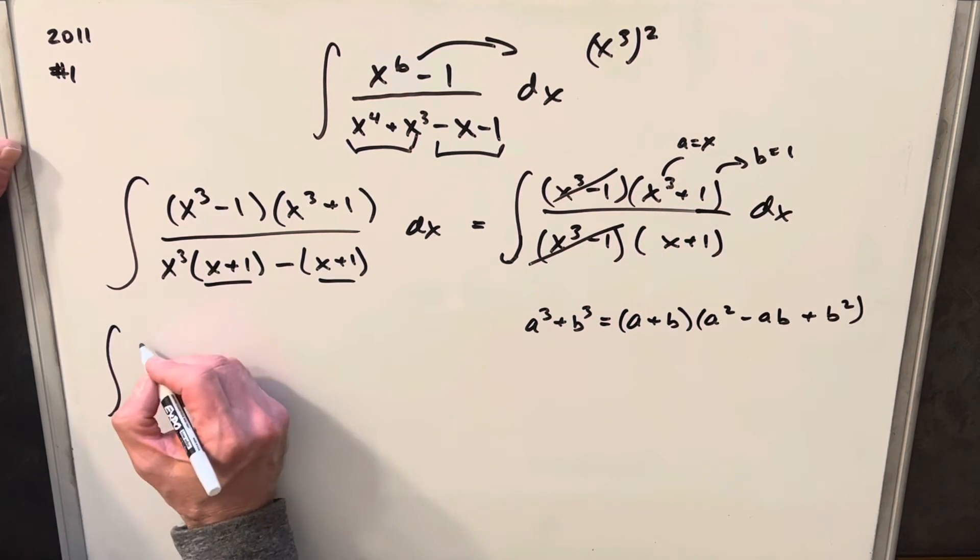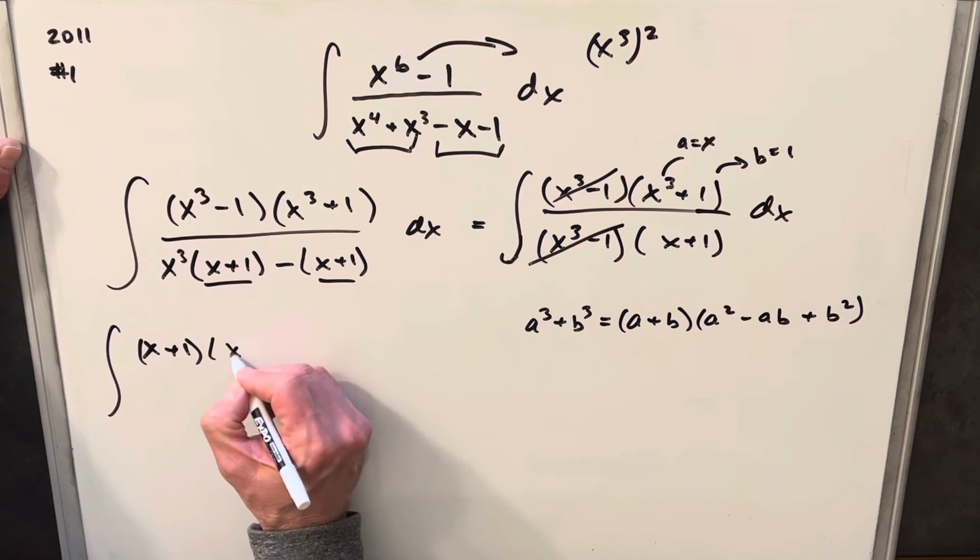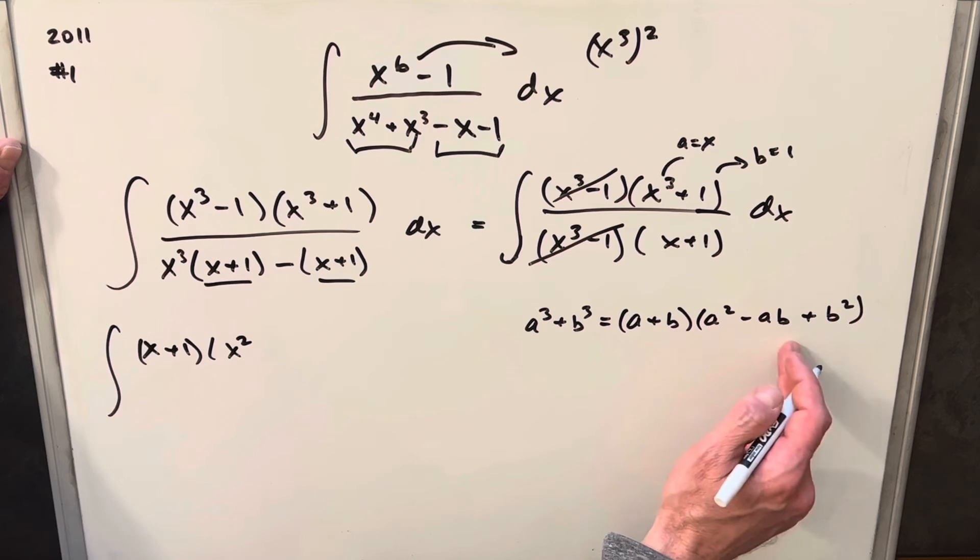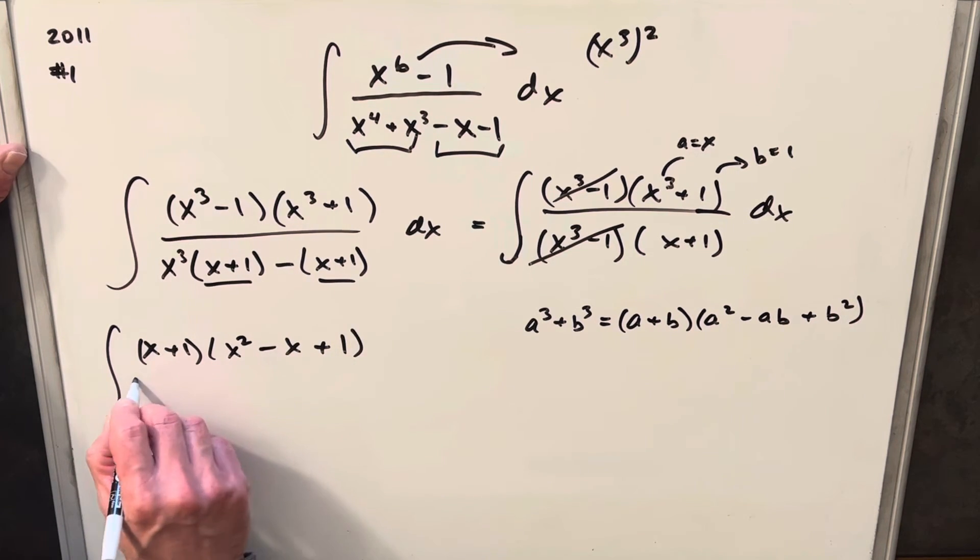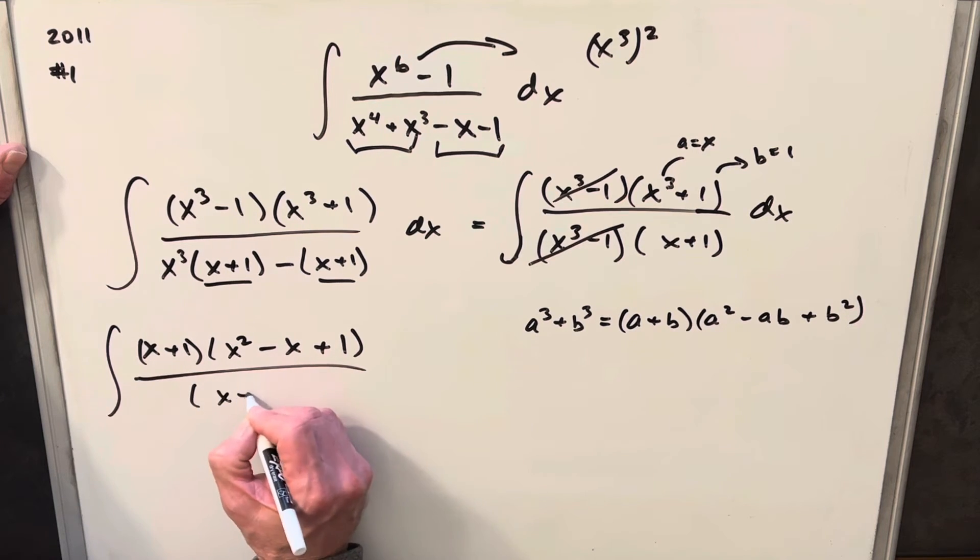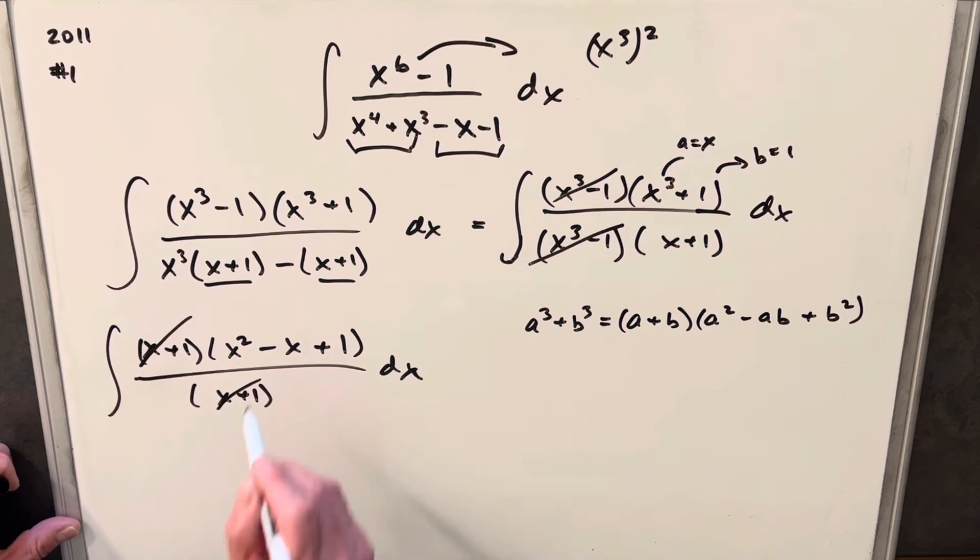Putting into this form, a plus b is just going to be x plus 1. Then this part, we're going to have x squared, 1 times x we're just going to minus x plus 1 squared is 1. And all this is just going to be over x plus 1. Then x plus 1 and x plus 1 is going to cancel.